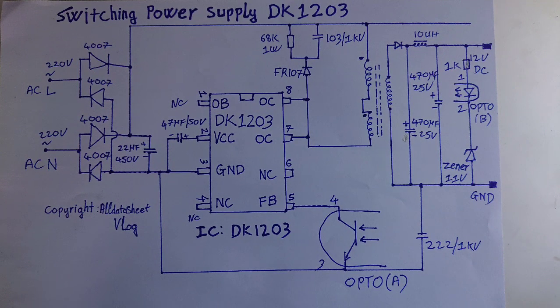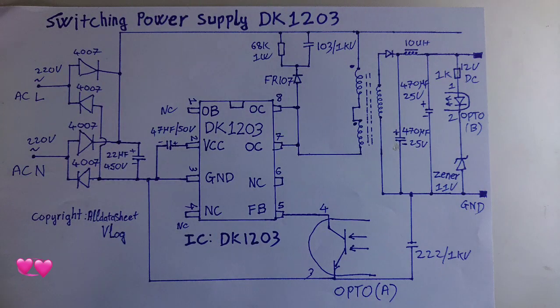Introduction of Power IC DK1203. DK1203 is an AC-DC switch mode power control type that controls power from the microchip's side.